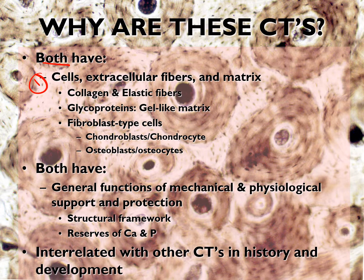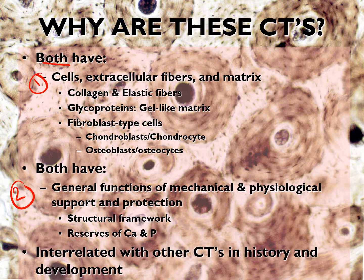The second reason is that cartilage and bone generally have a function of mechanical and physiological support and protection. The brain is found inside the cranial cavity, and the skull bones protect the brain, which is a very delicate structure. The heart and lungs are found in the thoracic cavity, protected by the bony thorax. Also, bones are a reservoir for calcium and phosphorus — when levels in the blood increase they are stored in bone, and when levels fall the bone breaks down and releases calcium and phosphorus.